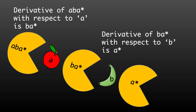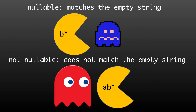Let's dissect what is happening here. The Pac-Man eating a fruit represents the derivative function. This means the derivative of ABA star with respect to A is BA star. The derivative function takes a regular expression and a character and returns the regular expression that is left to match. The function that checks whether the ghost is chasing Pac-Man is called the nullable function. It simply checks whether the regex that is left to match matches the empty string — because if it does, the fruit eaten must already be enough to satisfy the regex.